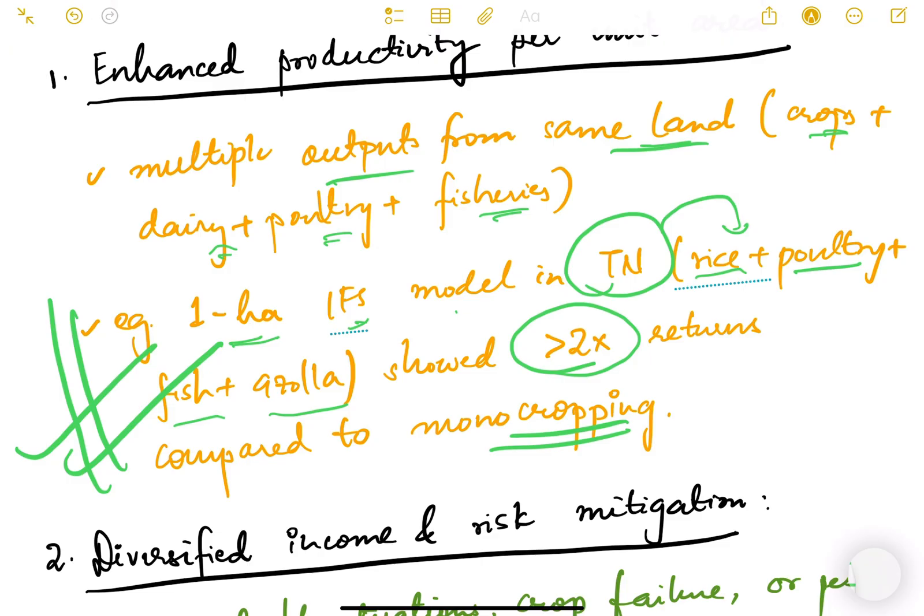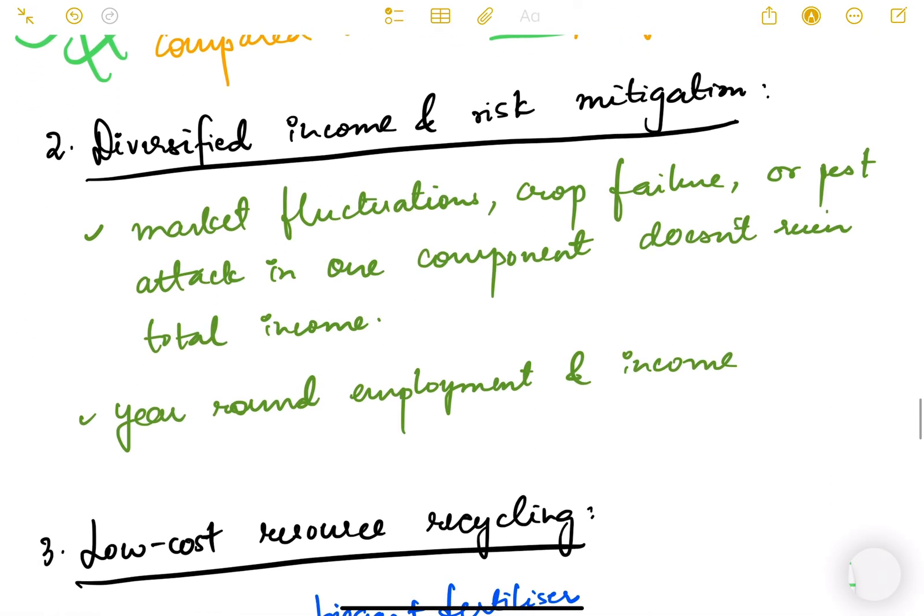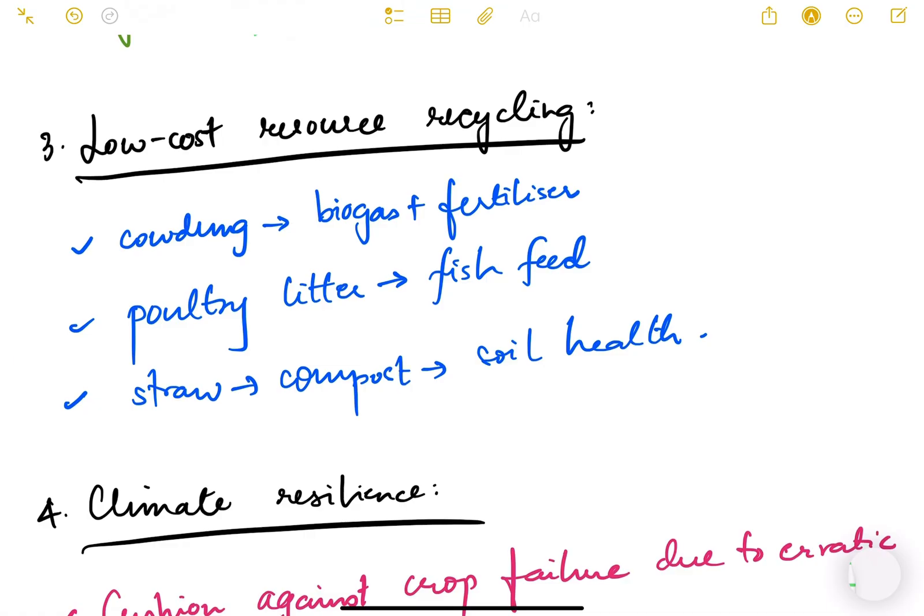Diversified income and risk mitigation - market fluctuations of prices, crop failure, or pest attack in one component doesn't ruin the total income. So there is a safety net for farmers and there is year-round employment and income, including for women.